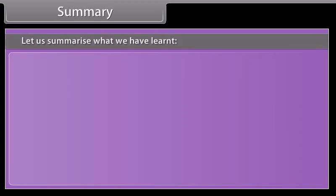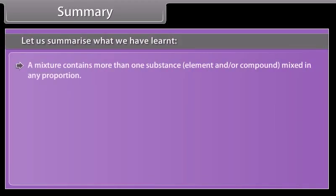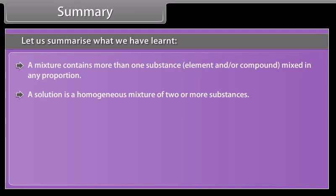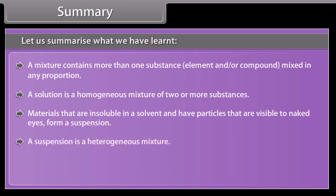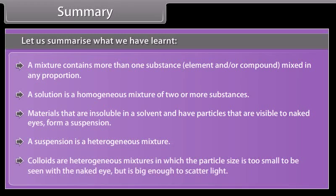Summary. A mixture contains more than one substance — element or compound — mixed in any proportion. A solution is a homogeneous mixture of two or more substances. Materials that are insoluble in a solvent and have particles visible to the naked eye form a suspension; a suspension is a heterogeneous mixture. Colloids are heterogeneous mixtures in which the particle size is too small to be seen with the naked eye but is big enough to scatter light.